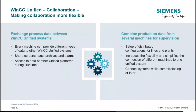Traditionally, viewing all data and processes of a plant required bringing everything to one central location. That is no longer the case with WinCC Unified. Collaboration is an option that allows you to maintain decentralized data and still have access to any WinCC Unified system anywhere within the plant. You can access screens, tags, and recipes on one HMI device and view or use that data on another device. You can combine production data from several machines into a supervisor station that grabs objects and data from various HMI systems, greatly increasing flexibility and simplifying connectivity.